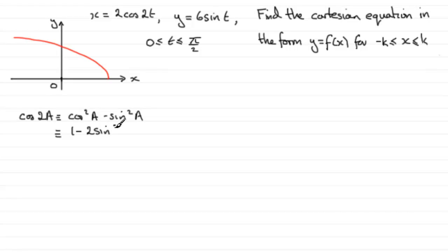then we get 1 minus sin²a minus another sin²a. So it's 1 minus 2sin²a. That's an alternative version. And that's the one that we're going to use here.